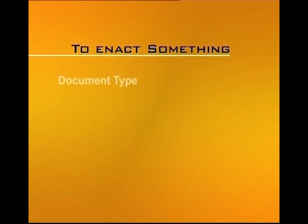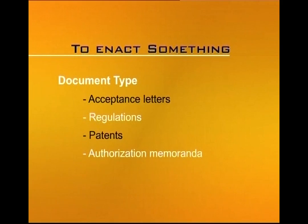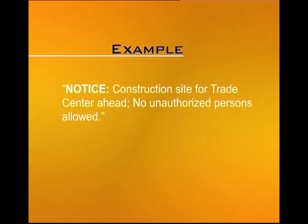Documents that are meant to enact or prohibit something include acceptance letters, regulations, patents, or authorization memoranda. These documents are generally shorter, giving some kind of instruction to do something or not to do something. They are more concise and to the point, and will not have many different sections. For example, a notice could read: 'Construction site for trade center ahead — no unauthorized persons allowed.' This is a very direct, clear notice which is prohibiting something. These were the different explicit purposes of writing a document.